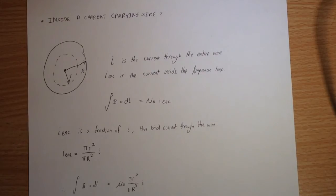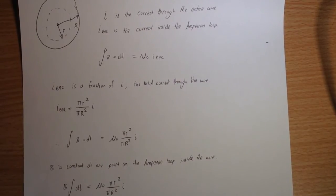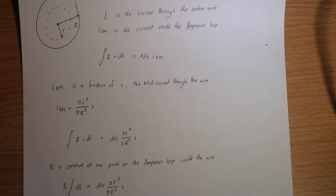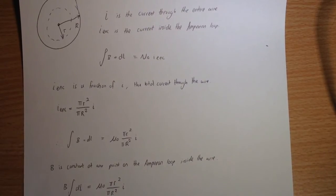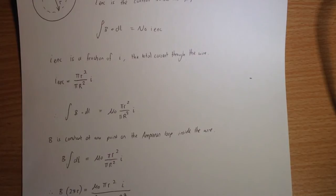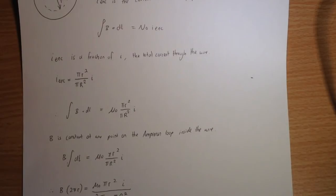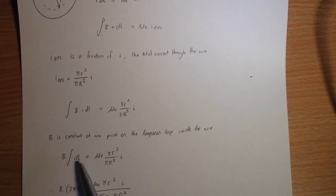But again, maybe you might need to consider this concept by watching the video again, if necessary, but that is a really good step we can take to make this a whole lot simpler than it would elsewise be by making that assumption. So, as such, we can substitute in our value for i enclosed that we just found into the Ampere's law expression, the integral of b dot dl equals mu naught pi little r squared on pi big r squared i. b is constant again at any point on the Ampereian loop because it's in a circle which represents a set of equidistant points.